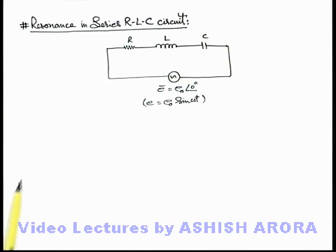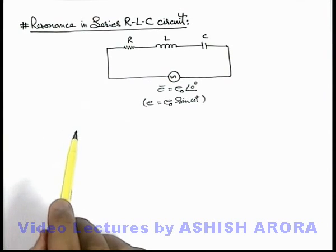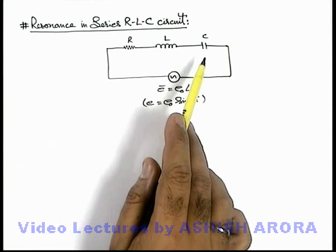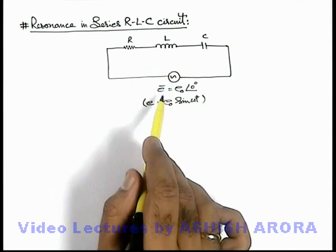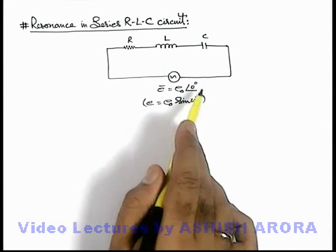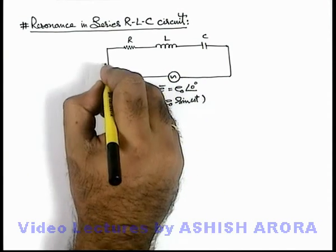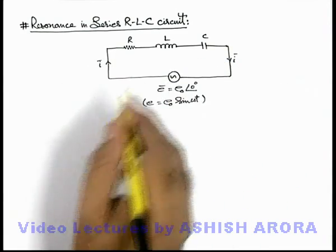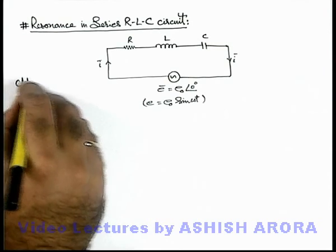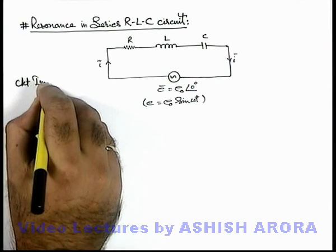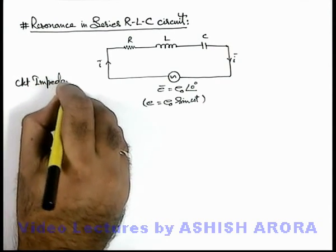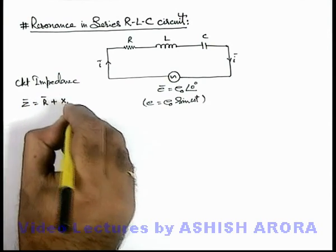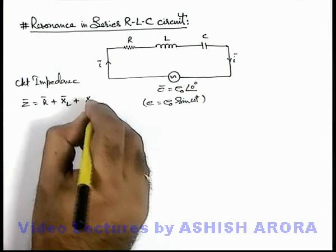Let us discuss the concept of resonance in a series RLC circuit. Here we can see the three components are connected in series across an AC EMF, which we can write in phasor form as E₀ at angle zero degree. If we wish to calculate the phasor current in the circuit, we need to calculate the circuit impedance. Circuit impedance Z in phasor form will be R plus X_L phasor plus X_C phasor.